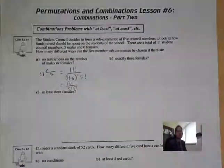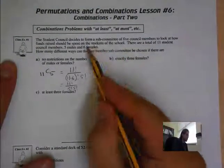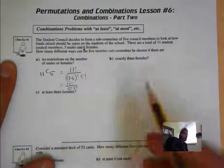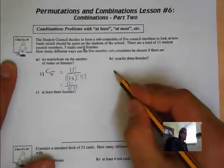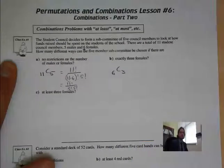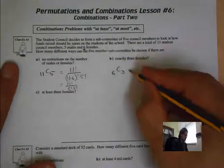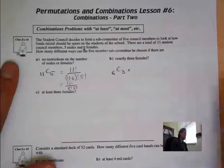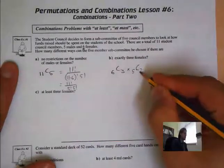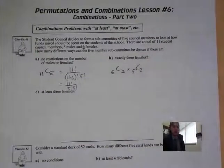The next question says: exactly 3 females. So here we want exactly 3 females. I'm going to do the most specific thing first. Out of a total of 6 females, we want exactly 3 — so out of 6, we're choosing 3 females. Now if we have 3 females chosen, that means there must be 2 males. So out of 5, we have 2 males. Click on your calculator and you get your answer.